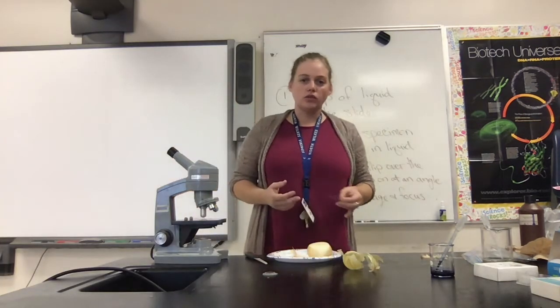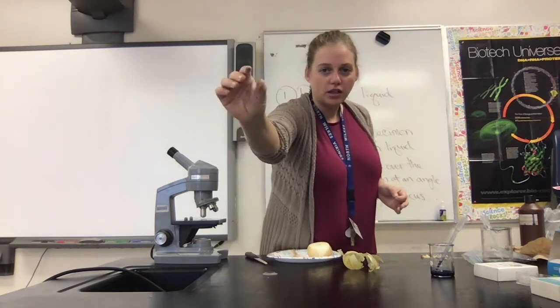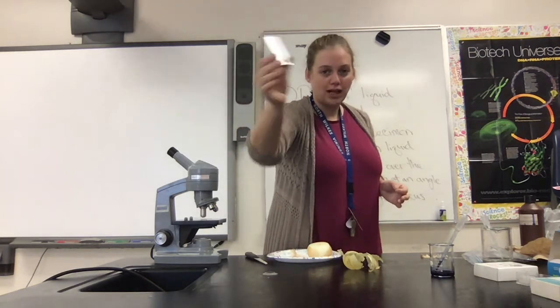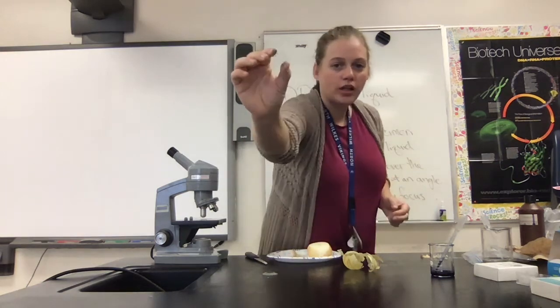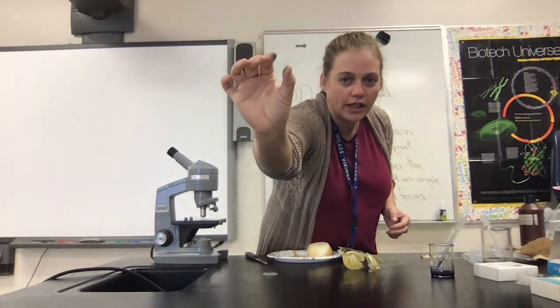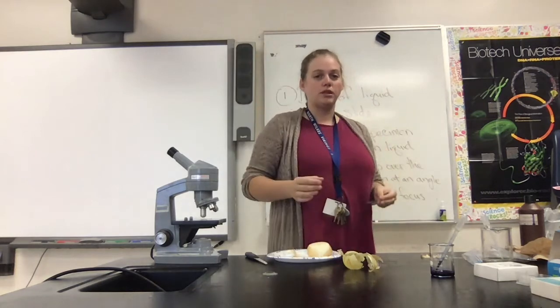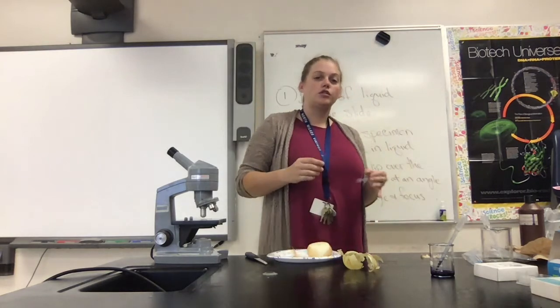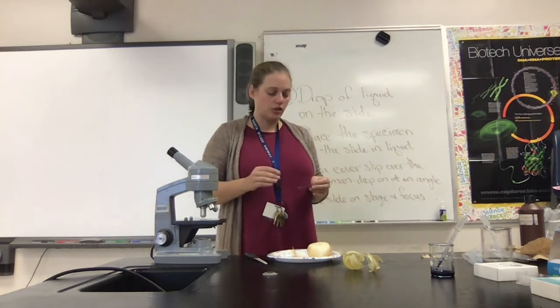We're going to be looking at several different types of cells today, and all of these cells are going to require us to make a wet mount slide. A slide is a larger piece of glass or plastic that we use to view an organism. We also have cover slips — tiny little pieces that we put over the specimen in order to protect the specimen and the microscope from touching one another.